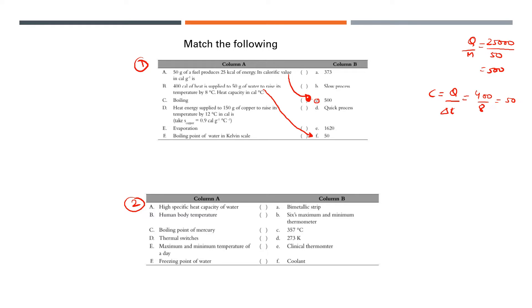Boiling is a quick process, it's a very fast process, it will be D. Heat energy supplied to 150 grams of copper to raise its temperature by 12 degrees centigrade. Q equals M times S times delta T, which is equal to 150 times 0.9 times 12, which will come to 1620. D will be E. Evaporation is a very slow process. Boiling point of water in Kelvin is 373 degrees. The formula is 100 plus 273 equals 373 K.